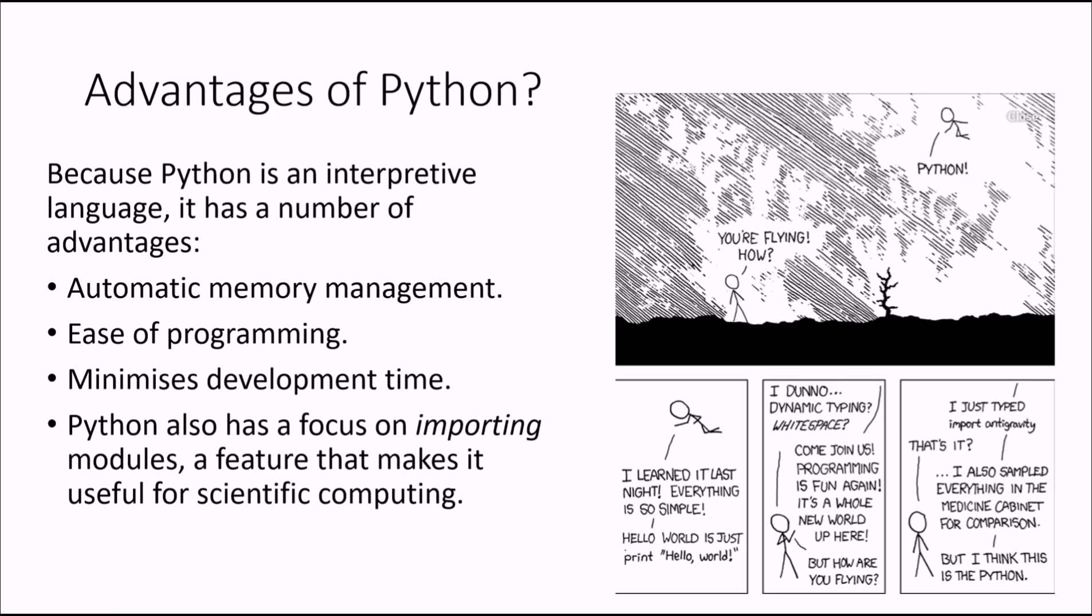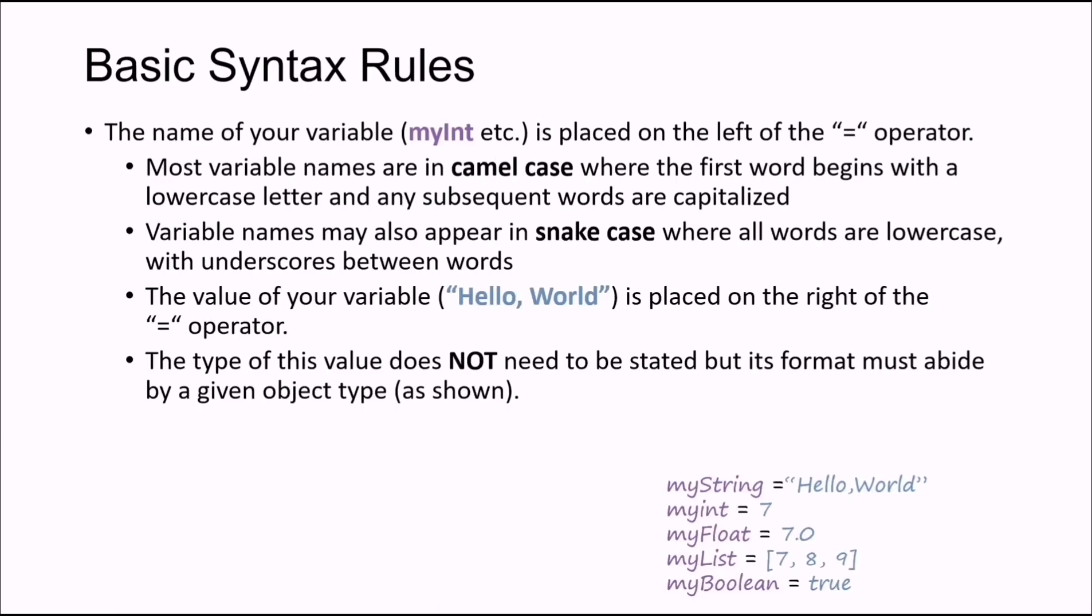Basic syntax has some rules, but not as difficult as C++, C, Java, etc. For example, myString equals 'Hello World,' and if you simply input myString, it will give you an output. You can get output from the Python interpreter just by calling its variable name.